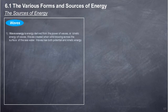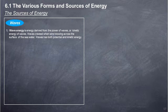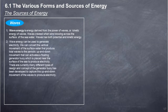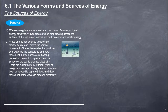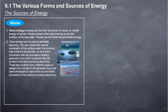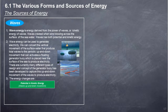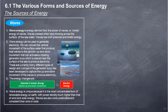Wave Energy: Wave energy is energy derived from the power of waves, or kinetic energy of waves. Waves are created when wind blows across the surface of seawater. Waves have both potential and kinetic energy. Wave energy can be used to generate electricity by converting the vertical movement of surface water that produces waves into periodic up-and-down movement, which activates a floating generator buoy placed near the sea surface to produce electricity. The energy change is: potential and kinetic energy of waves' up-and-down movement → electric energy. Wave energy is the most concentrated form of renewable energy on earth, with power density much higher than wind and solar energy. Waves are also more predictable and consistent than wind or solar.